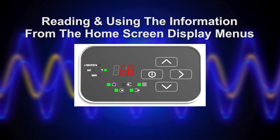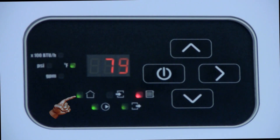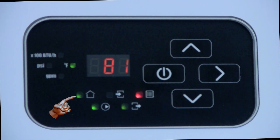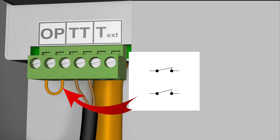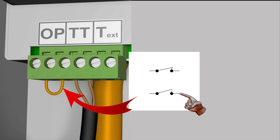Reading and using the information from the home screen display menus. In this view of the home screen display, we can see that beside the little icon of the house, the LED is green. This indicates that the OP terminal is closed and the thermostat is calling for heat. If the thermostat was not calling, the LED would be off. The OP terminal from the factory has a jumper installed to enable the boiler to operate. Removing the jumper and installing a dry contact switch will allow the boiler to operate as normal with the room thermostat when the contact is closed and disable all heating functions when the contact is open.